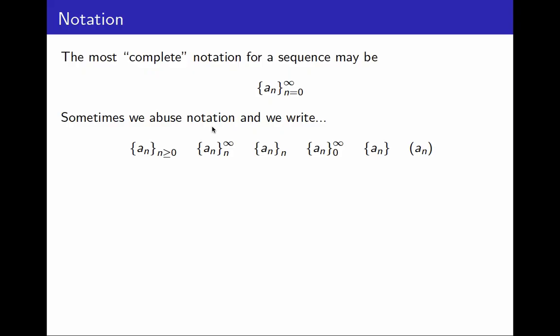But be careful if there is ambiguity, we should be very precise. For example, if I want to describe this sequence, n divided by k, when k goes from 2 to infinity, I really should write everything. Because in this case, there are two variables, n and k, and I have to say which one I mean as the variable for the sequence. In this case, k.